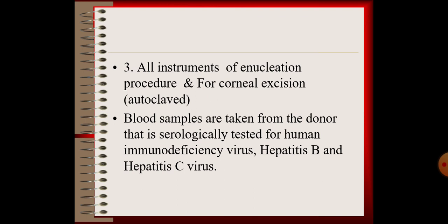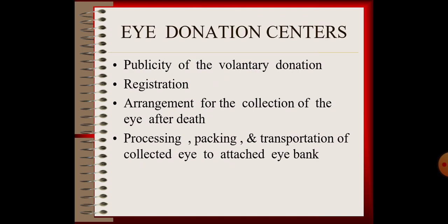Blood samples are taken from the donor and serologically tested for HIV, hepatitis B, and hepatitis C. Eye donation centers are responsible for publicity of voluntary donation, registration, arrangement for collection of the eye after death, processing, packing, and transportation of the collected eye to the attached eye bank. Regarding the blind population: about 40 million people are blind worldwide; in India, more than 50 million are affected by blindness; and corneal blindness accounts for 4.6 million cases.